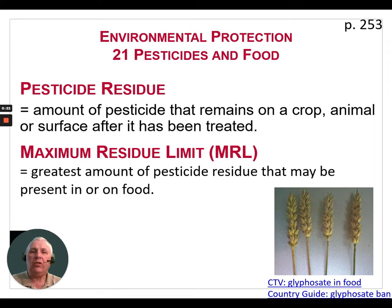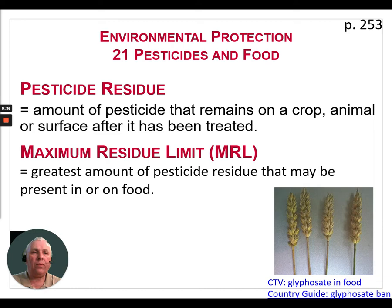To ensure food safety, government agencies set maximum residue limits for pesticides based on what is currently known about the effects of the pesticide. Maximum residue limits, referred to as MRLs, is the greatest amount of pesticide residue that may be present in or on food.